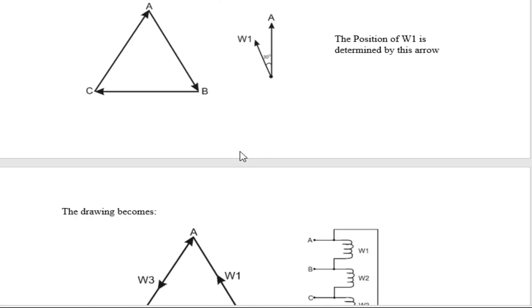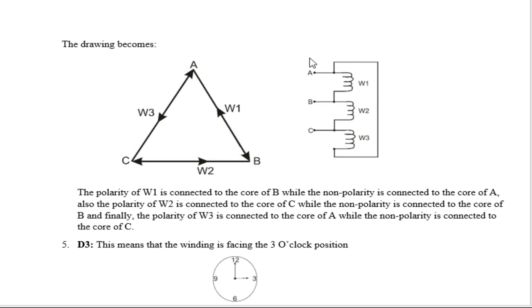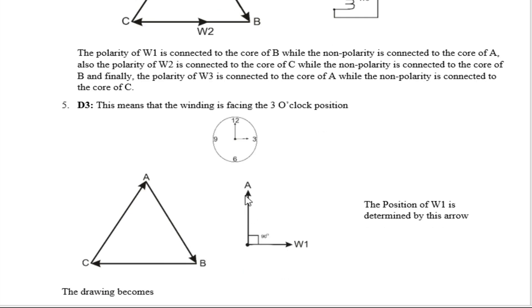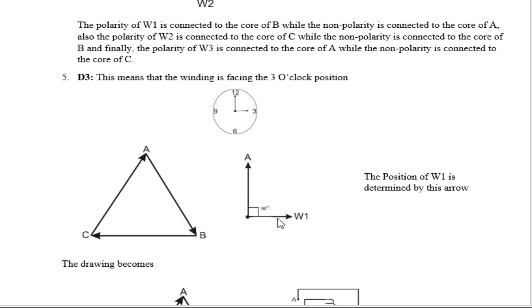Anytime you see D11, you know this is how you draw the vector diagram. The next one is D3. D3 means three o'clock, 90 degrees. You can see 90 degrees on the diagram. From A, B, and C, this diagram falls on the C line. When you superimpose W1 on this line, the arrow is moving away from C — because this line is the C line. Therefore W1 moves away from C, W2 moves away from A, and W3 moves away from B.